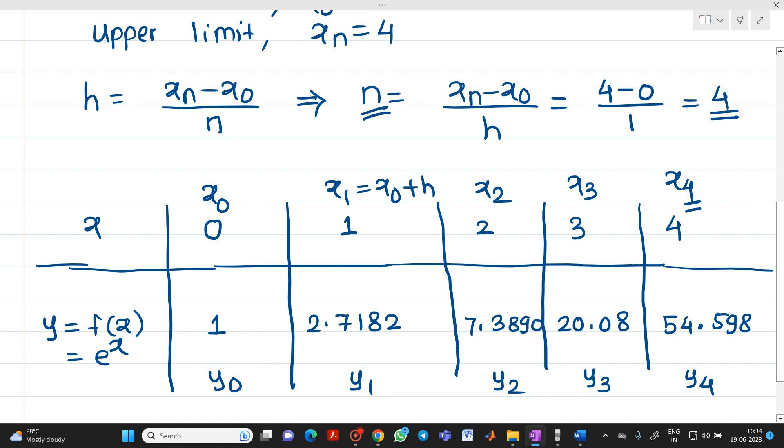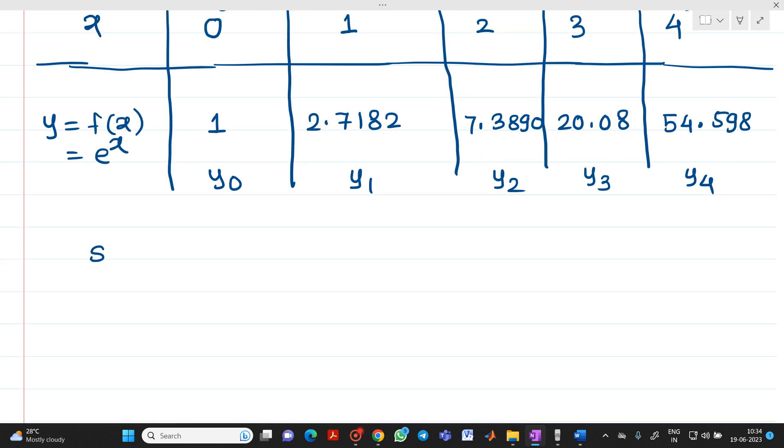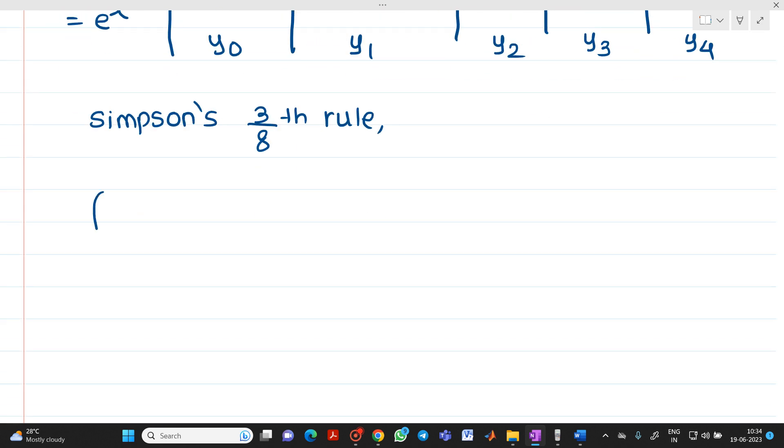Now we solve this numerical using Simpson's 3 by 8 rule. The formula is integration x0 to xn of f of x dx equals 3h upon 8 times the sum of first element and last element of y ordinates, that is y0 plus y4, plus 2 into sum of y ordinates which are multiples of 3, so y3, plus 3 into sum of remaining ordinates which are not multiples of 3, so y1 plus y2.